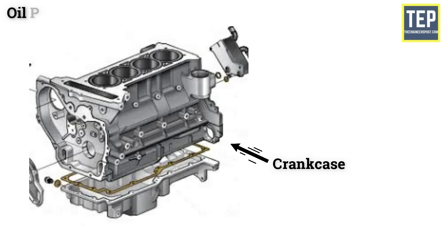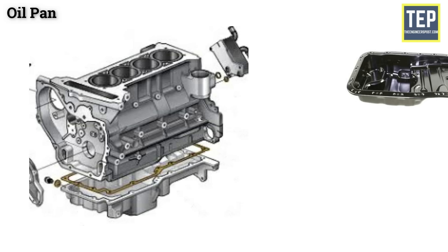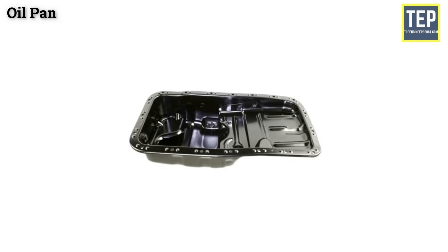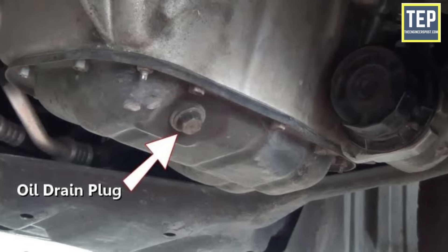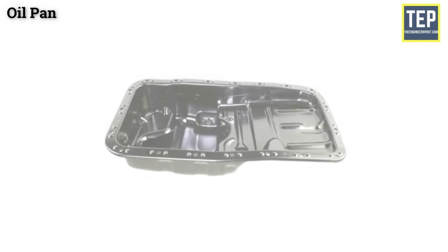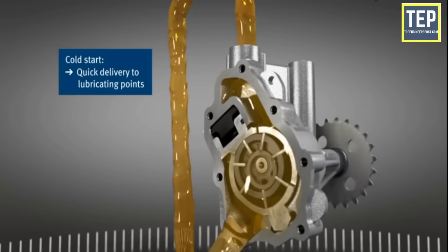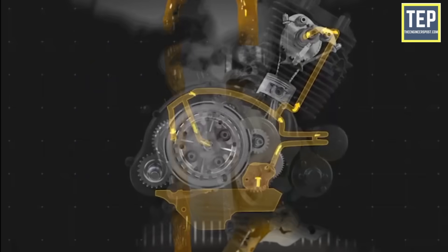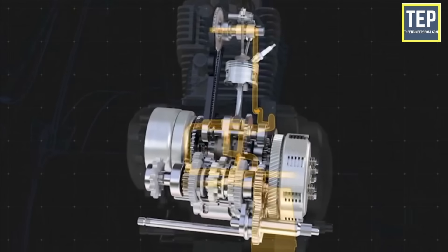The bottom half of the crank case is called the oil pan or sump. It is attached to the crank case through set screws and a gasket to make the joint leak-proof. The oil pan serves as a reservoir for the storage, cooling and ventilation of engine lubricating oil. A drain plug at the bottom allows dirty oil to be drained during oil replacement. The sump is made of pressed steel sheet or aluminium alloy casting. The oil pump draws oil from the oil pan and sends it to all working parts, and drained oil runs back into the pan for constant circulation.